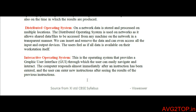Distributed operating system: here data is stored and processed on multiple locations across a network. The data you save is split up and stored into multiple locations. It also allows sharing of data or files from one machine to all other machines connected to the network. For example, if you have two or three computers connected together using a distributed OS, you have one resource on the first computer.